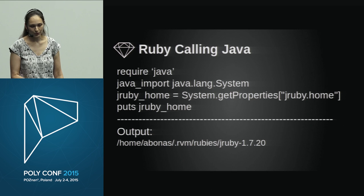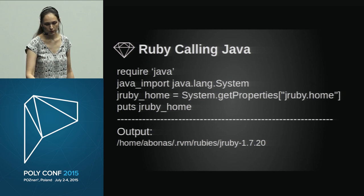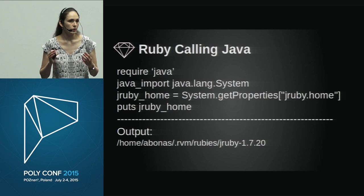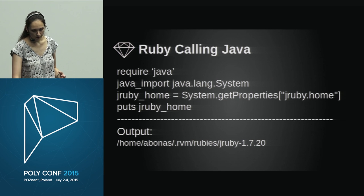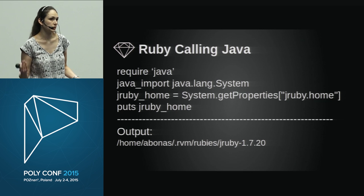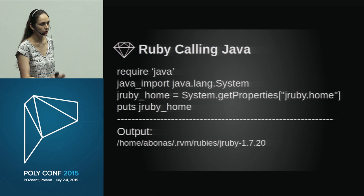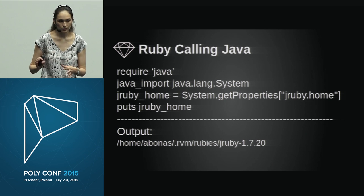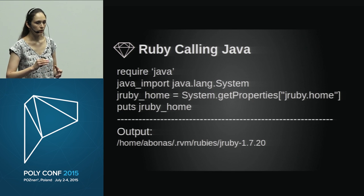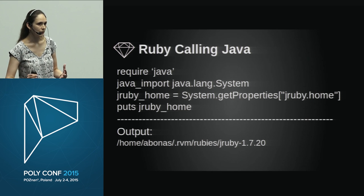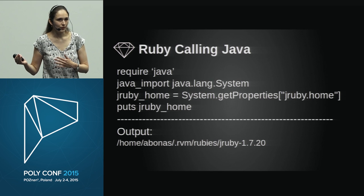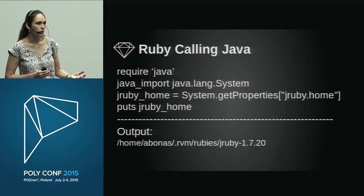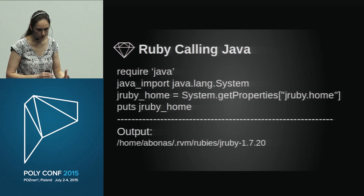Now let's see Ruby calling Java. You need to do a require Java statement, then a Java import for the class you want to use. If you want multiple classes from the same JAR, you do a require statement with a path to the JAR. I used the well-known System.getProperties, calling it to get the value for the JRuby Home key, then printing it with puts. Interestingly, running dot class dot ancestors on the result shows the entire Java class hierarchy translated to Ruby — the map interface, Java-based object — all reflected on the Ruby side.